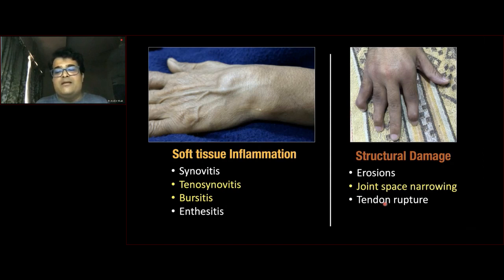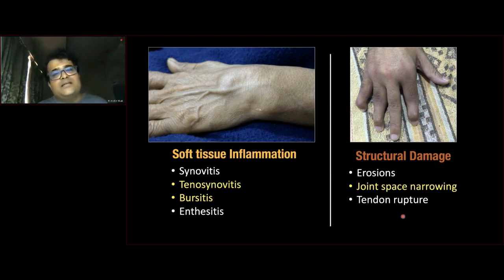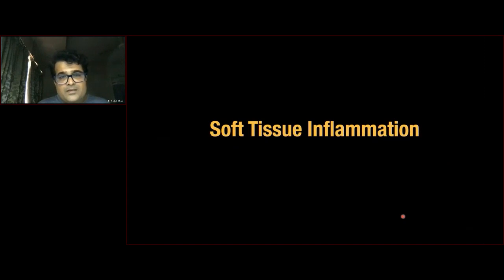If you know to look for these structures and concepts, your imaging in inflammatory arthropathies is going to be straightforward. The key framework is: soft tissue inflammation — synovitis, tenosynovitis, bursitis, enthesitis — and structural damage — erosions, joint space narrowing, and tendon disruption.